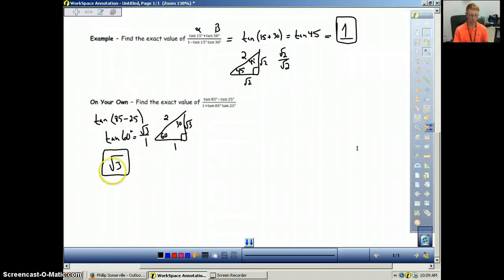So for this one, you should have gotten the square root of 3. You had tangent of 85 minus 25 is tangent of 60. Draw your 60, 30, 90 triangle. Label your sides. The tangent is opposite, square root of 3 over adjacent, which is 1. So obviously we just have square root of 3.